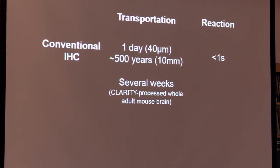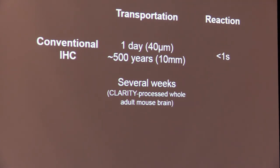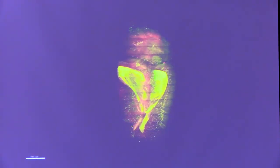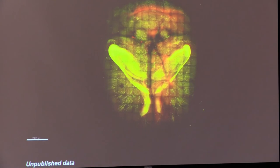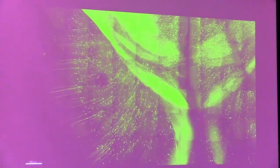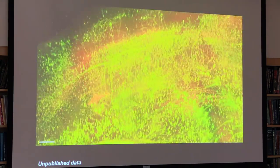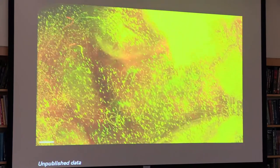Unless the timescales for antibody transport and antibody-antigen reaction are matched, conventional immunohistochemistry cannot be scaled up to thick tissues. We explored ways to facilitate transport of macromolecules while simultaneously slowing down reaction kinetics. In the technique we have been developing, dubbed eTango, we could selectively facilitate antibody transport and slow reaction kinetics to address this problem. Here is a representative result: a Thy1-EGFP mouse brain stained against GFP, showing almost perfect, complete, and uniform staining throughout the entire brain.